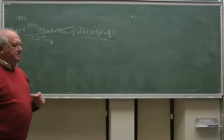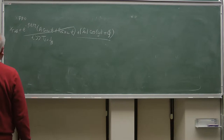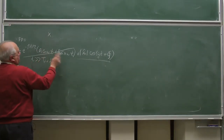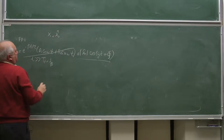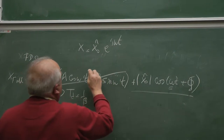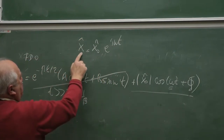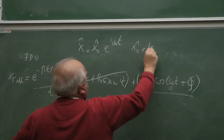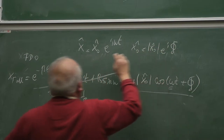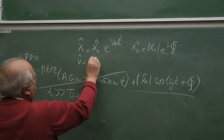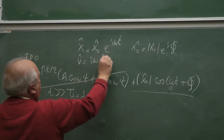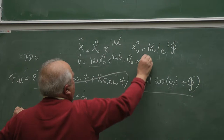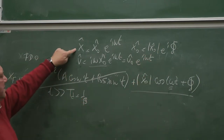Now we shall consider the energies. What's the energy of our oscillator? We use this magical formula again. For the inhomogeneous solution, this is the solution, and we take the real part of it. X_0 is magnitude times e to the i phi. And velocity, which is the derivative, is i omega x_0 e to the i omega t — so v_0 equals i omega x_0 e to the i omega t. This is the displacement; this is the velocity.